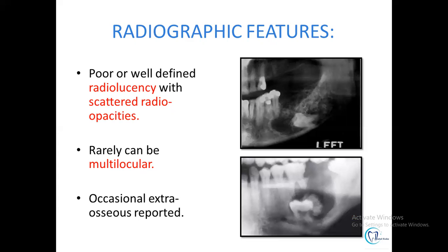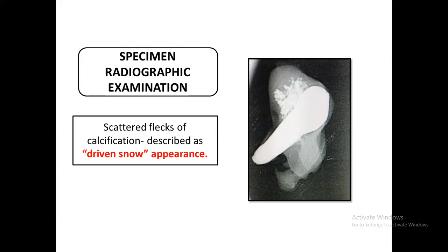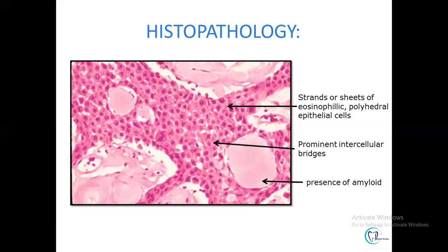Radiographically, CEOT lesions can appear as poorly defined or well-defined radiolucency — mostly unilocular, rarely multilocular. Well-defined radiolucencies are often associated with scattered radiopacities. Some cases show irregular bony trabeculae giving a multilocular or honeycomb appearance. There can also be flecks of calcification within the radiolucent areas giving a 'driven snow' appearance, which is a characteristic finding for CEOT. When associated with an impacted tooth, CEOT can lead to a mistaken diagnosis of dentigerous cyst.